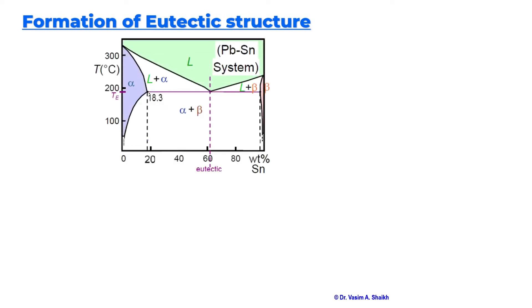Here we will look at the formation of eutectic structure with the help of an example. The example we will be looking into is the lead and tin phase diagram, also called the lead and tin system. On the x-axis you can see weight percent of tin, and on the y-axis you can see the temperature.